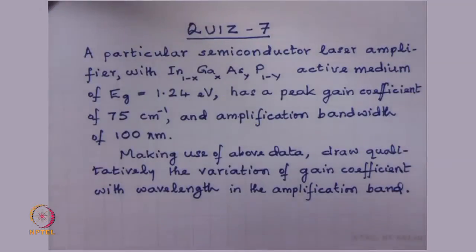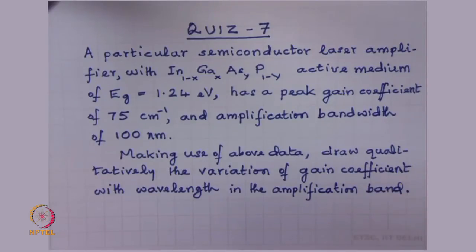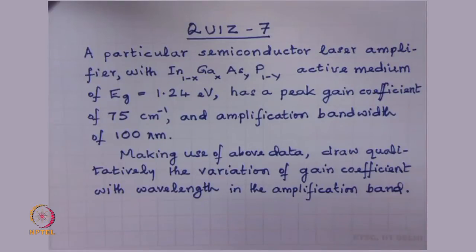This was the quiz: a particular semiconductor laser amplifier with indium gallium arsenide phosphide active medium of Eg equal to 1.24 eV has a peak gain coefficient of 75 centimeter inverse and amplification bandwidth of 100 nanometers. Making use of the above data, draw qualitatively the variation of gain coefficient with wavelength in the amplification band.